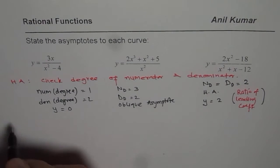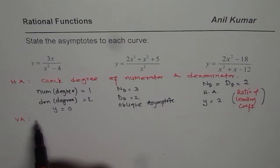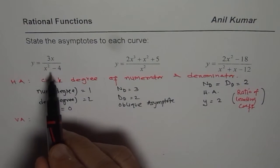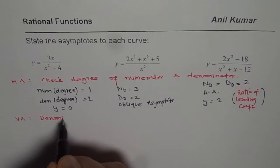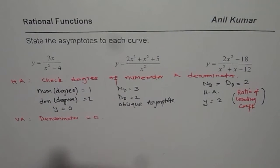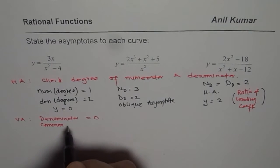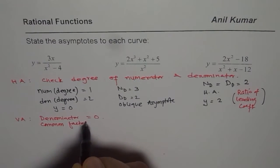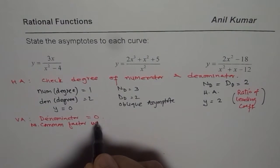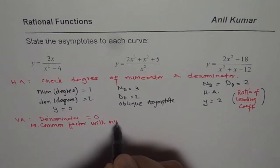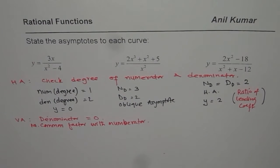Now let us find vertical asymptotes. To find vertical asymptotes, the denominator should equal 0, and the denominator should not have a common factor with the numerator. No common factor — otherwise you may get a hole.